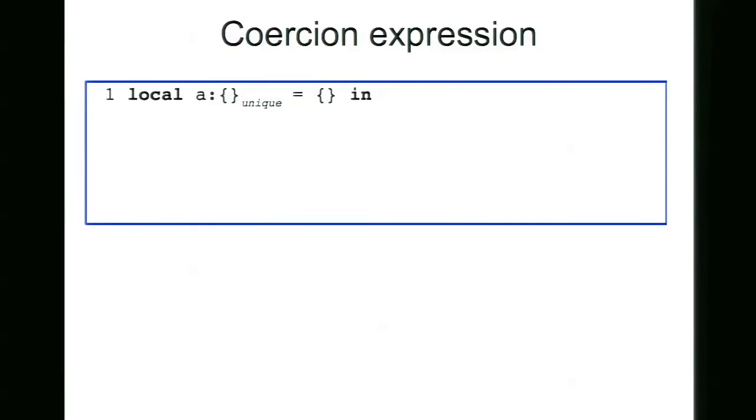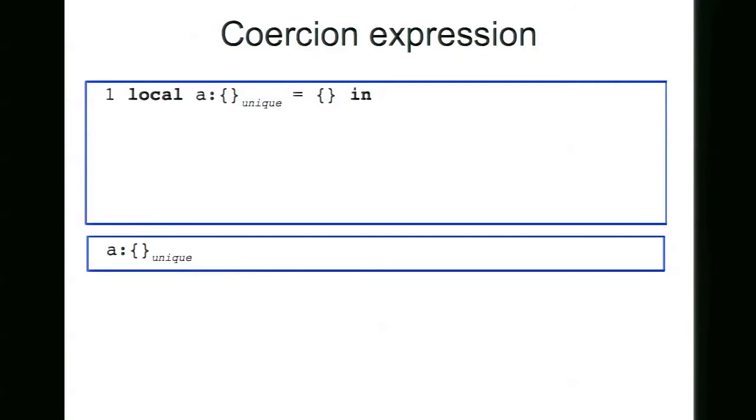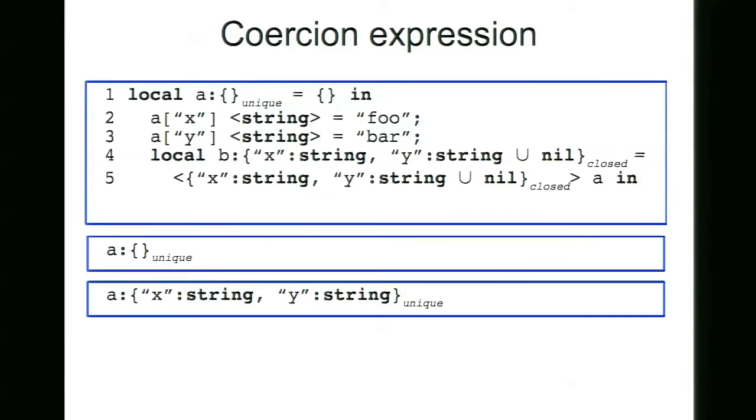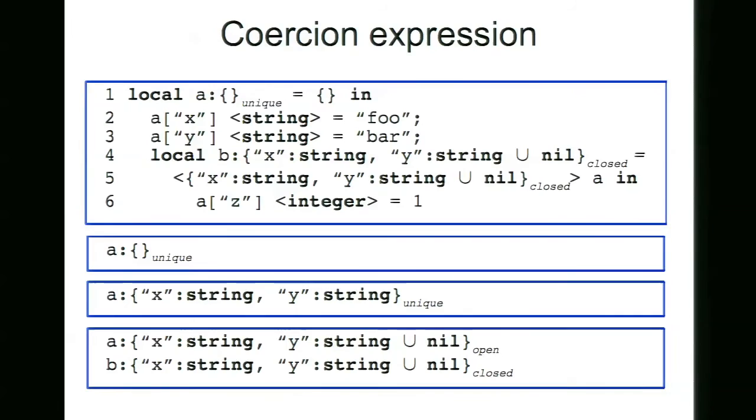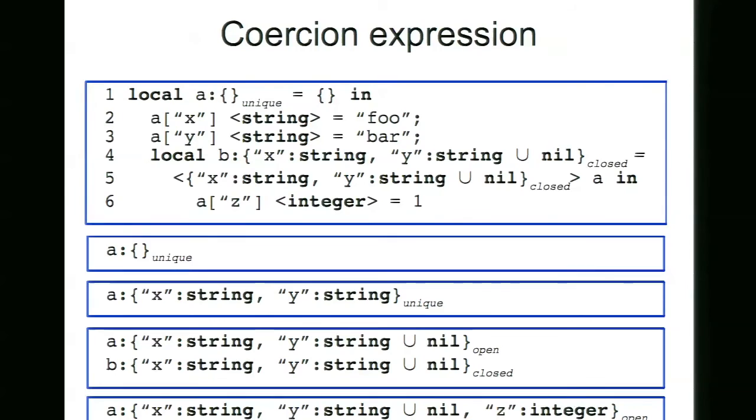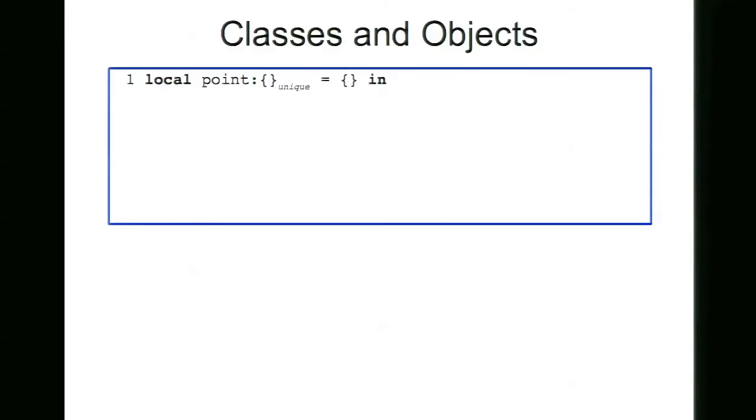But sometimes we want to change the types of tables in a safe way. So for this reason, we have the coercion expression. Like in this example, we again start the type of A with a unique table. Then we add two fields to this table. And then we are coercing the type of A to also now include the type nil inside the field Y. So this works and the type of A is still open. And for this reason, we still can refine its type to include field Z of type integer.